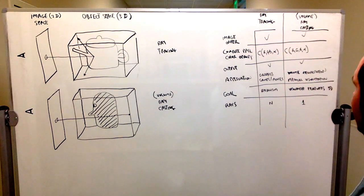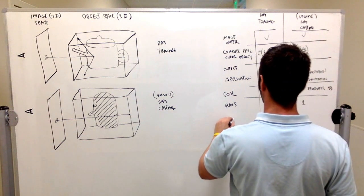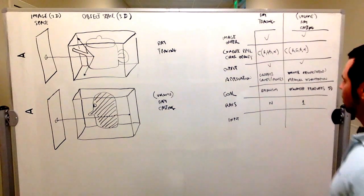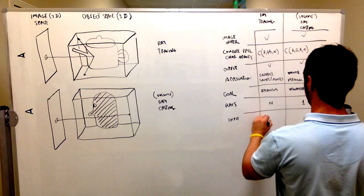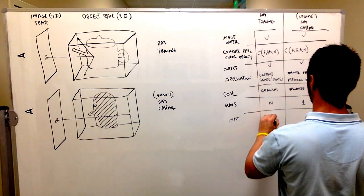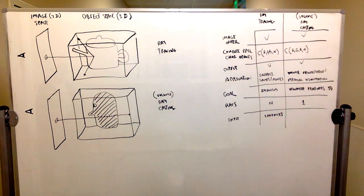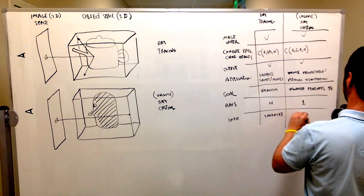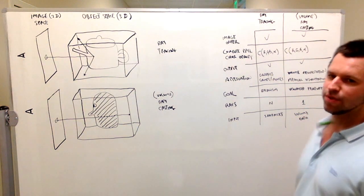One thing I forgot to mention is the input to the scene is generally different. In ray tracing, the input is generally a set of surfaces, whereas in volume ray casting, the input is volume data, or data laid out on a grid in 3D space.